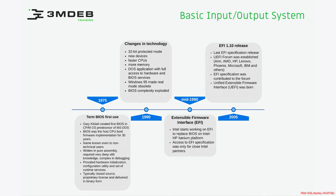BIOS was looking for the bootloader in the first 512 bytes of the boot media, which could be a floppy disk or hard disk. In that way it passed control to the operating system. There are BIOS-like firmware implementations which use exactly the same methodology of pure assembly implementation.